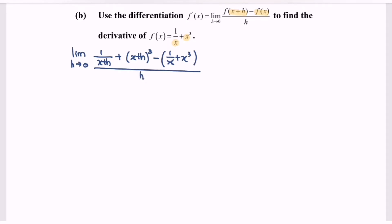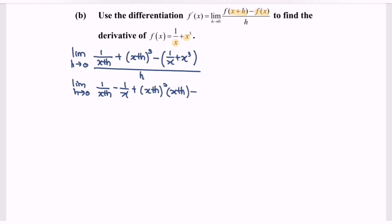Kindly rearrange the expression. Limit as h approaches zero, where we have 1 over (x plus h) minus 1 over x, plus (x plus h) squared multiplied by (x plus h) minus x cubed, over h. Next, equate the denominators and expand the expression.